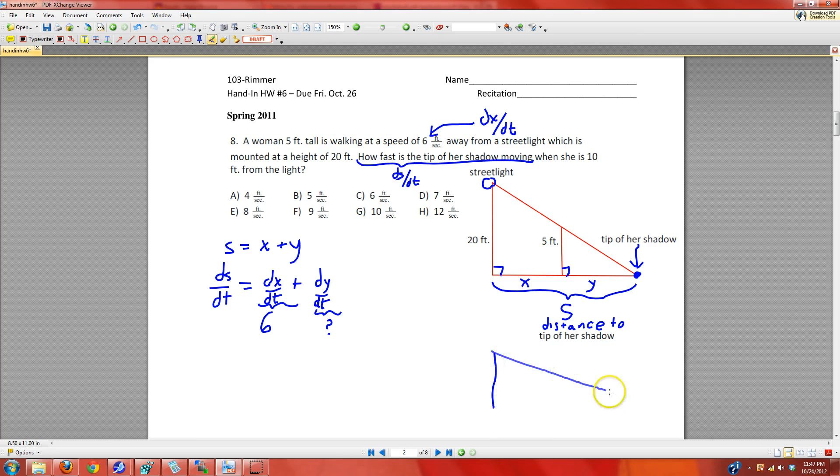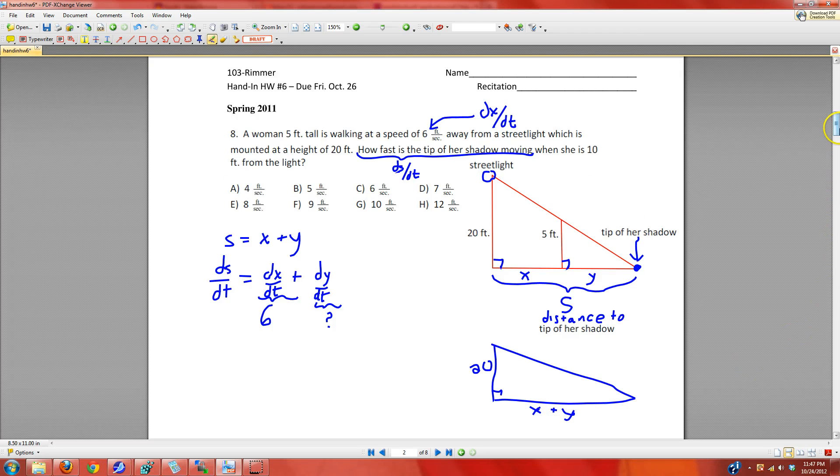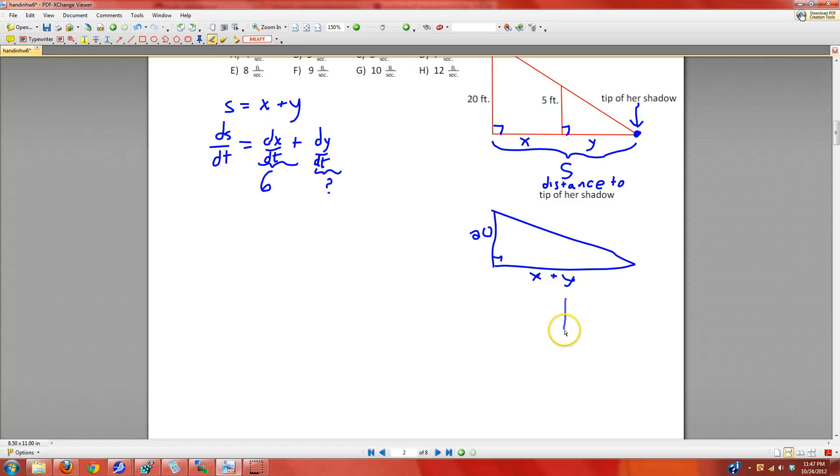Let me just draw crude copies of the triangle above. In this triangle, we have 20 and X plus Y for the base. And in the smaller triangle, we have 5 and Y for the base. And there are similar triangles.